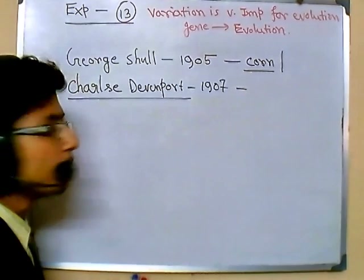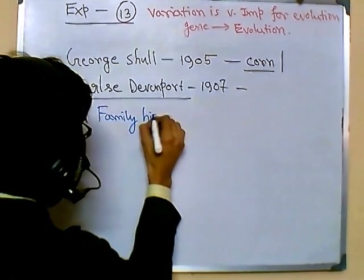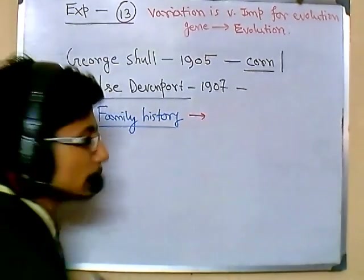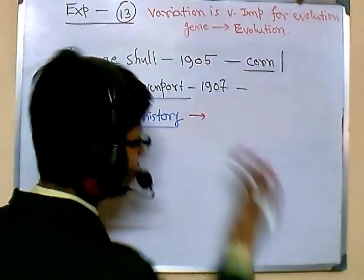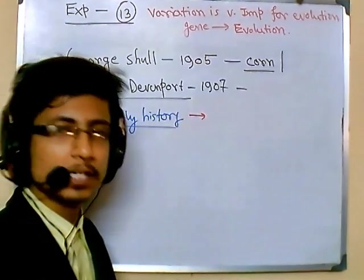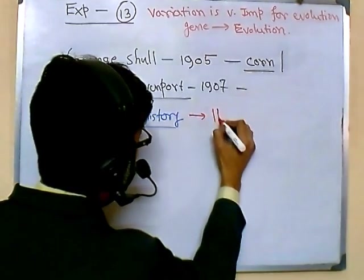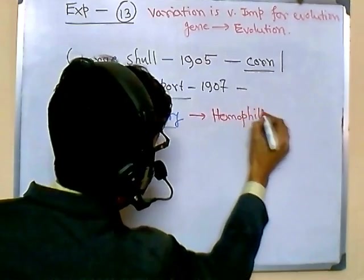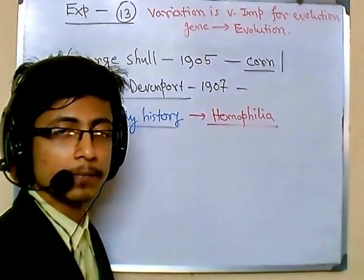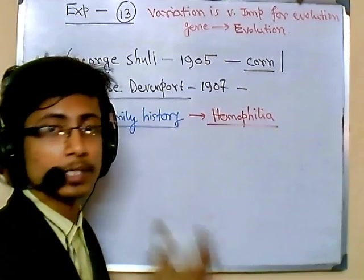He took different family histories. At that time, a very important and interesting one was the family history of Queen Victoria and her family, because Queen Victoria's royal family was devastated by the royal blood disease known as hemophilia. Hemophilia helped scientists study and follow the genetic patterns of humans and to apply Mendel's laws of genetics.